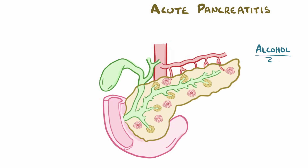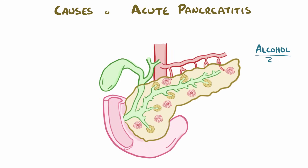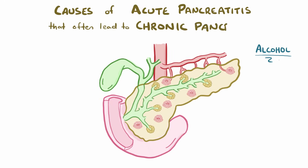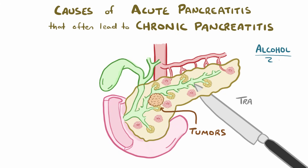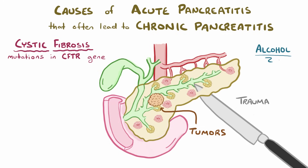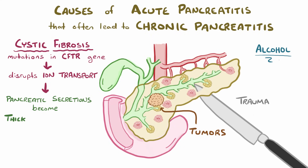In addition to alcohol abuse, other known causes of acute pancreatitis that frequently turn into chronic pancreatitis include tumors, trauma to the pancreas, and cystic fibrosis. In fact, the term cystic fibrosis refers to the pancreatic cysts and fibrosis that develop in patients with mutations in the CFTR gene. That gene encodes for an ion transporter, and mutations in that transporter cause the pancreatic secretions to become thick and sticky, leading to obstruction of the ducts. Importantly, cystic fibrosis is the main cause of chronic pancreatitis in children.